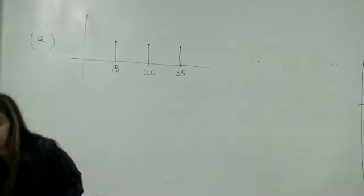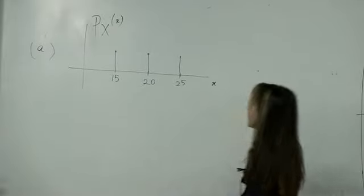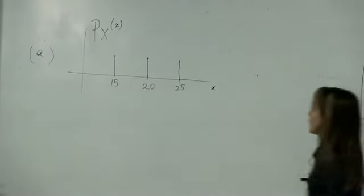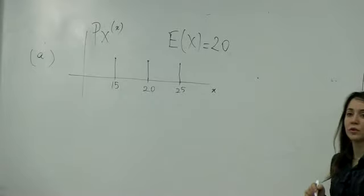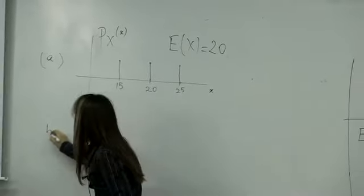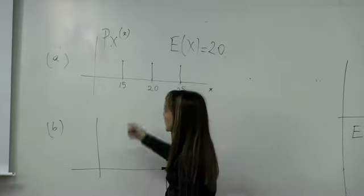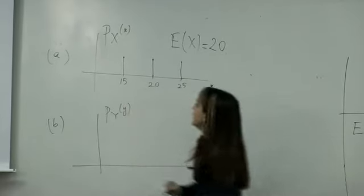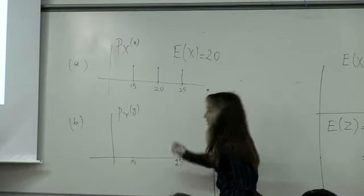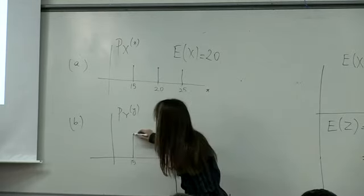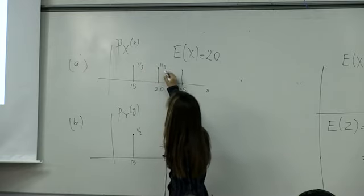Example A: the probability that x is 15, 20, or 25 is 1/3 each. Let's plot the PMF — x is either 15, 20, or 25 with probability 1/3 each. The expected value of x is 20. Alternatively, consider random variable y: it's either 15 or 25, equally likely, with probability 1/2 each. The mean of y is also 20, by the center of gravity.